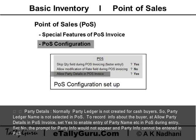Party Details: Normally, a party ledger is not created for cash buyers, so party ledger name is not selected in POS. To record info about the buyer, at 'Allow Party Details in POS Invoice', set Yes to enable entry of party name, etc. during entry. Set No and the prompt for party info would not appear and party info cannot be entered in POS.